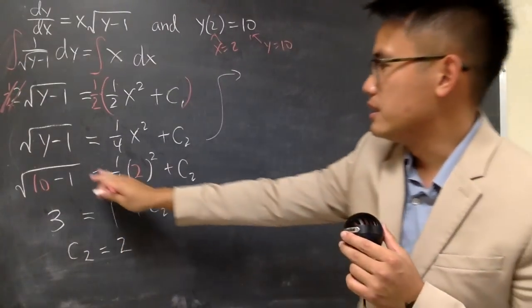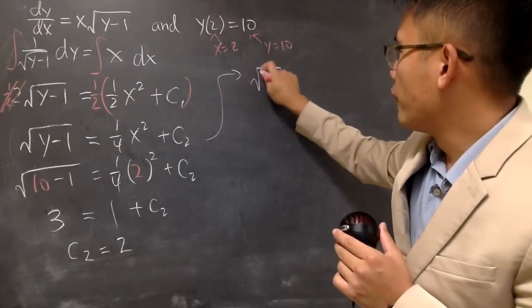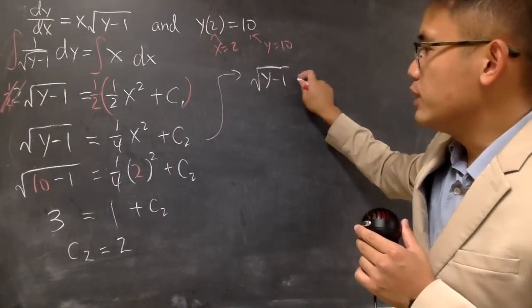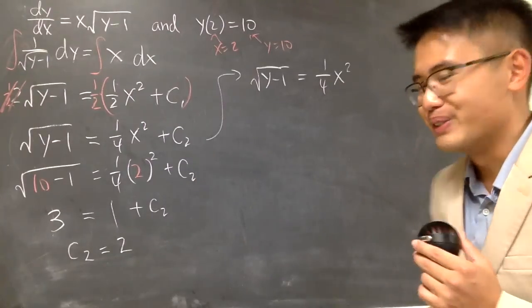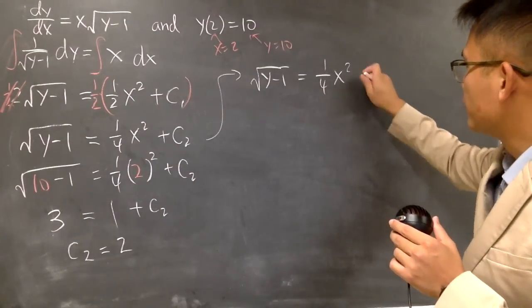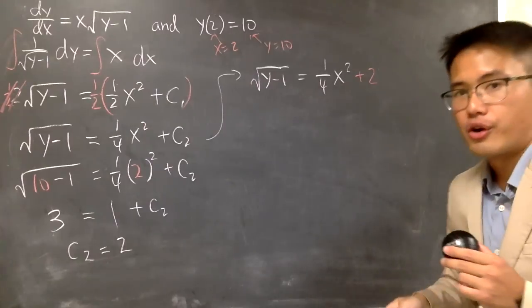So from here we can see square root of y minus 1 is equal to 1/4 x squared. And the c2 is 2, so I just put down plus 2 right here for the c2.